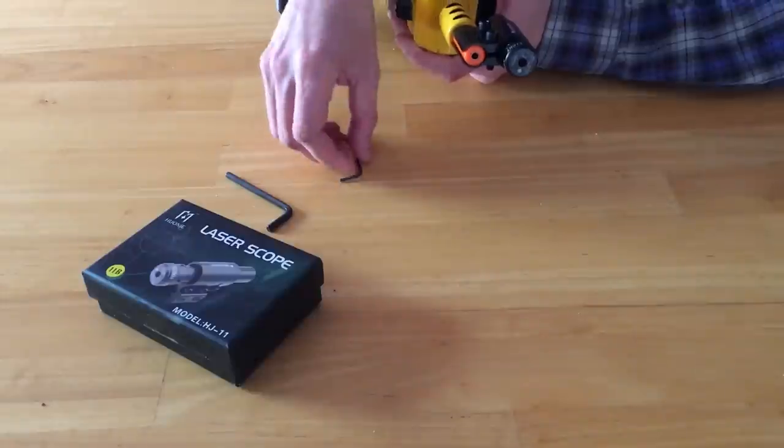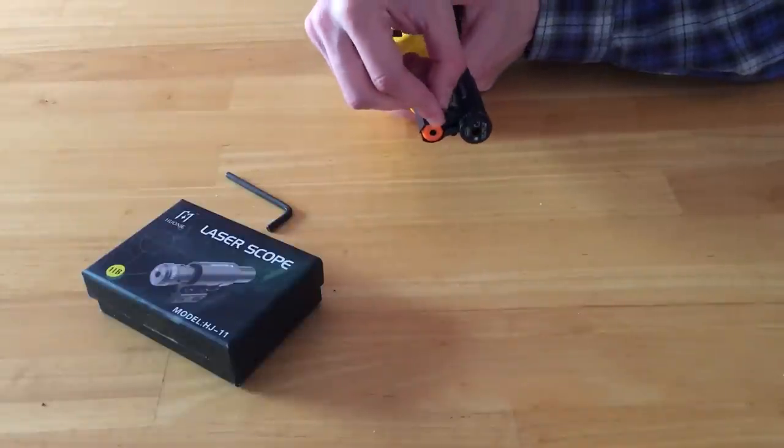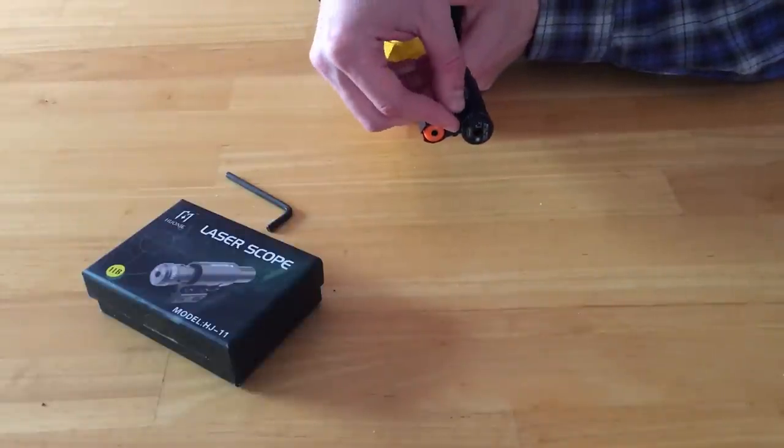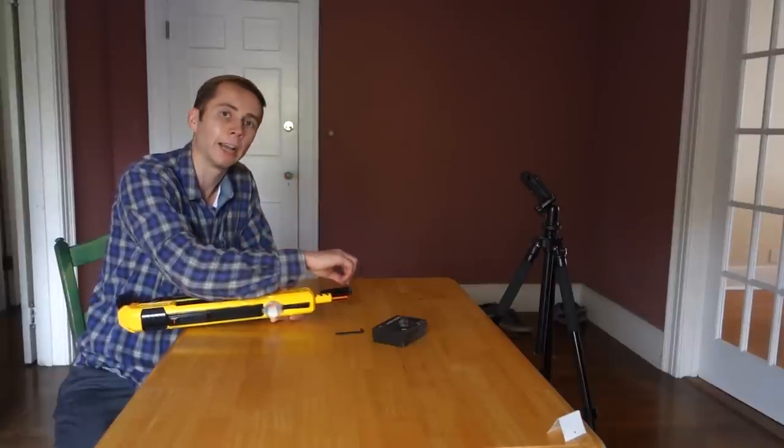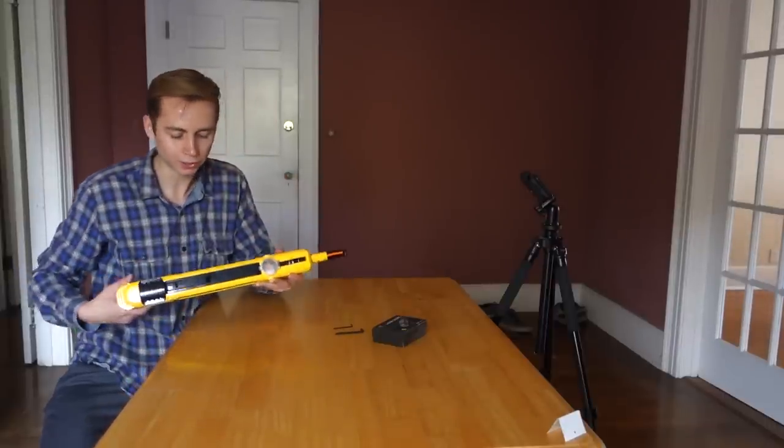There are two smaller ports on the sight here. You can use the smaller Allen wrench to kind of fine-tune the laser itself. But at the end of the day, the Bug Assault is more like a shotgun than a sniper rifle. So I decided at this point I'm not going to worry too much about that.